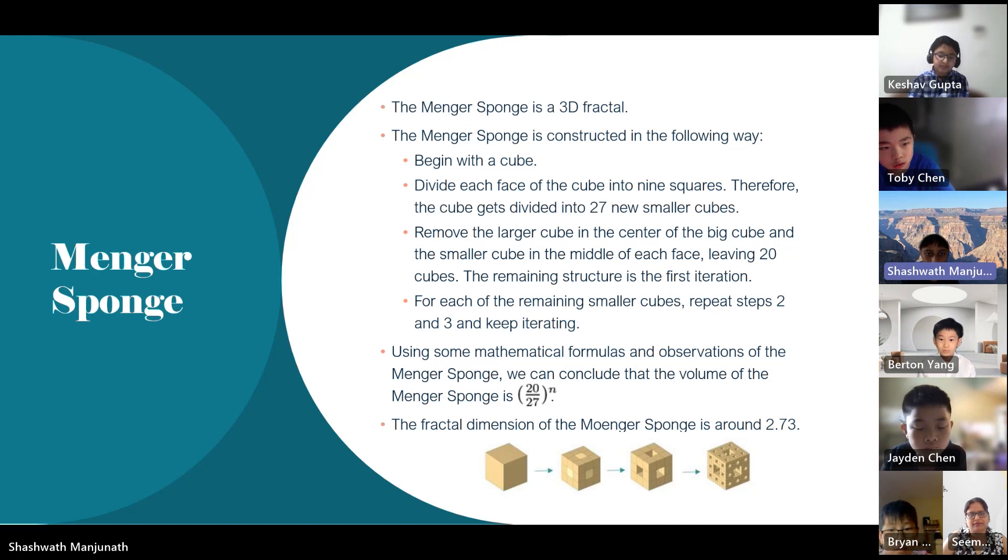Using some mathematical formulas and observations of the Menger sponge, we can conclude that the volume of the Menger sponge is 20 by 27 to the power n. The fractal dimension of the Menger sponge is around 2.73.